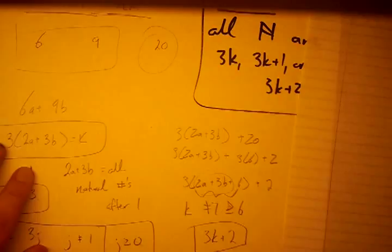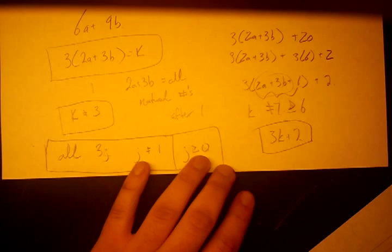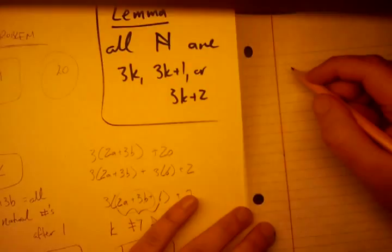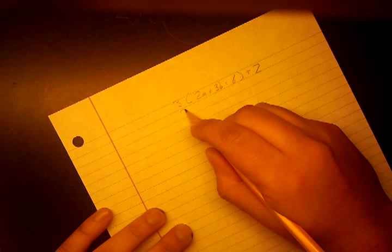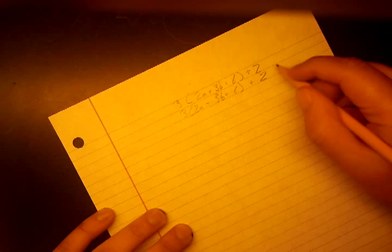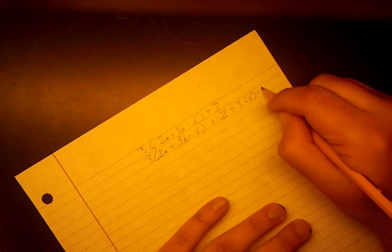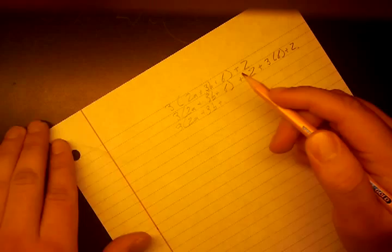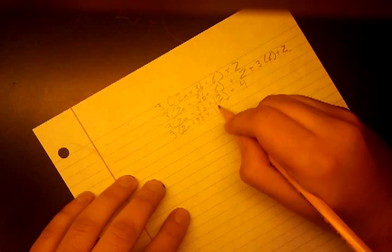Now we have multiples of three (3j) and multiples of three plus two (3k+2). To form numbers that are multiples of three plus one, we introduce another twenty. Adding another twenty gives three times (two·a + three·b + 13) + 1. Letting l equal that inner quantity, l must be at least 13 and l cannot equal 14. So we can form all values of the form 3l + 1.